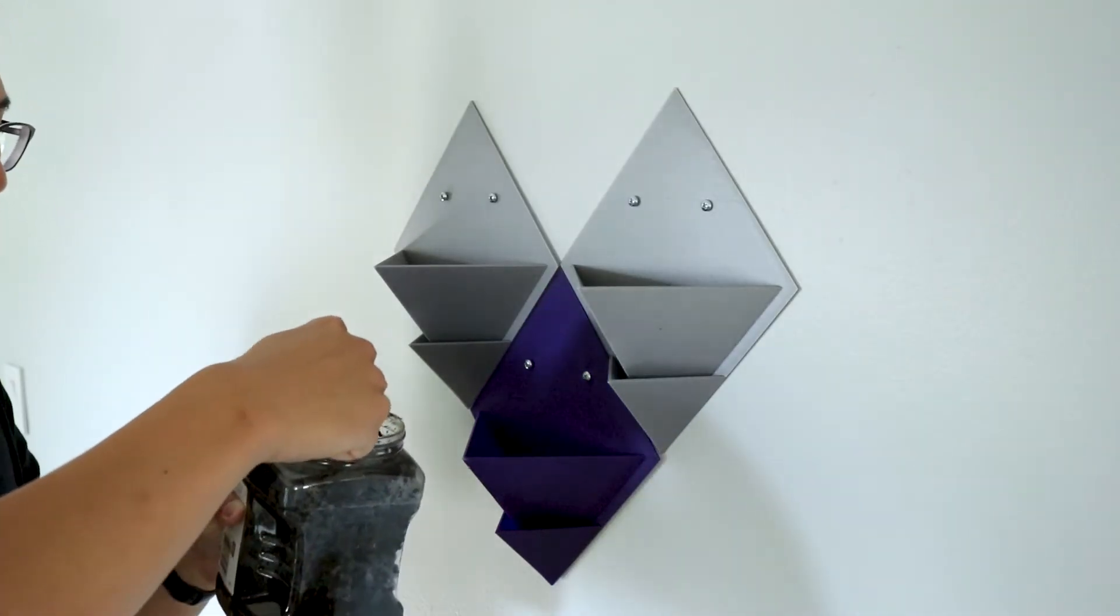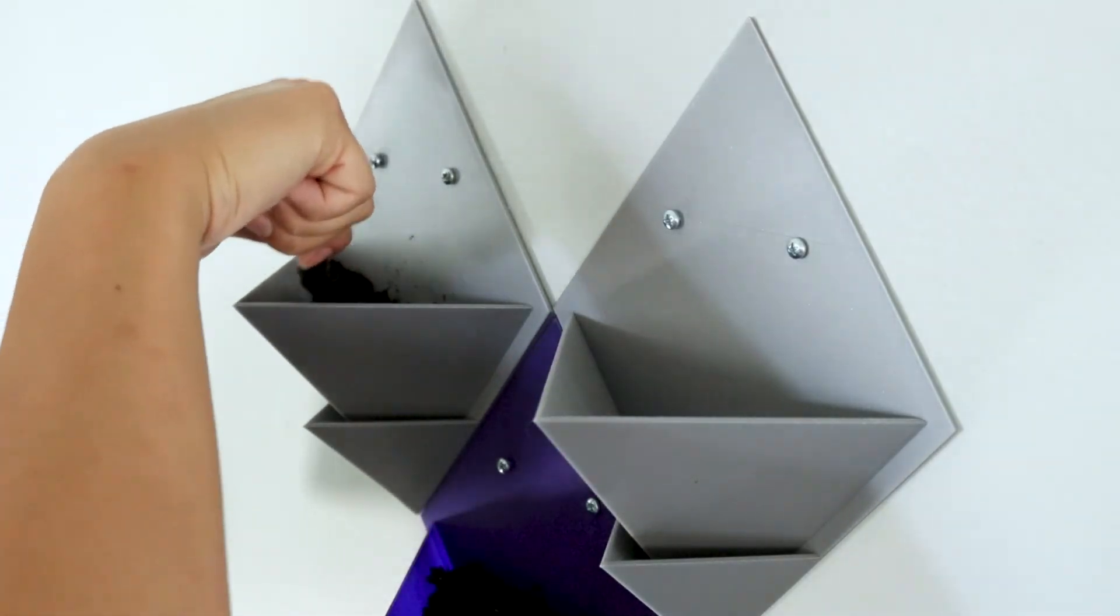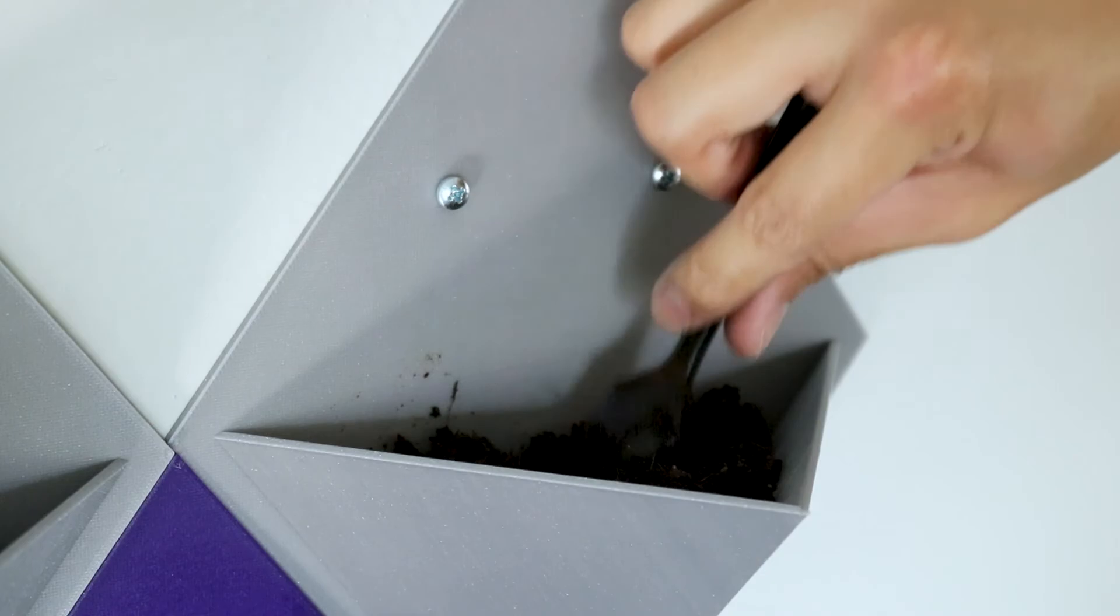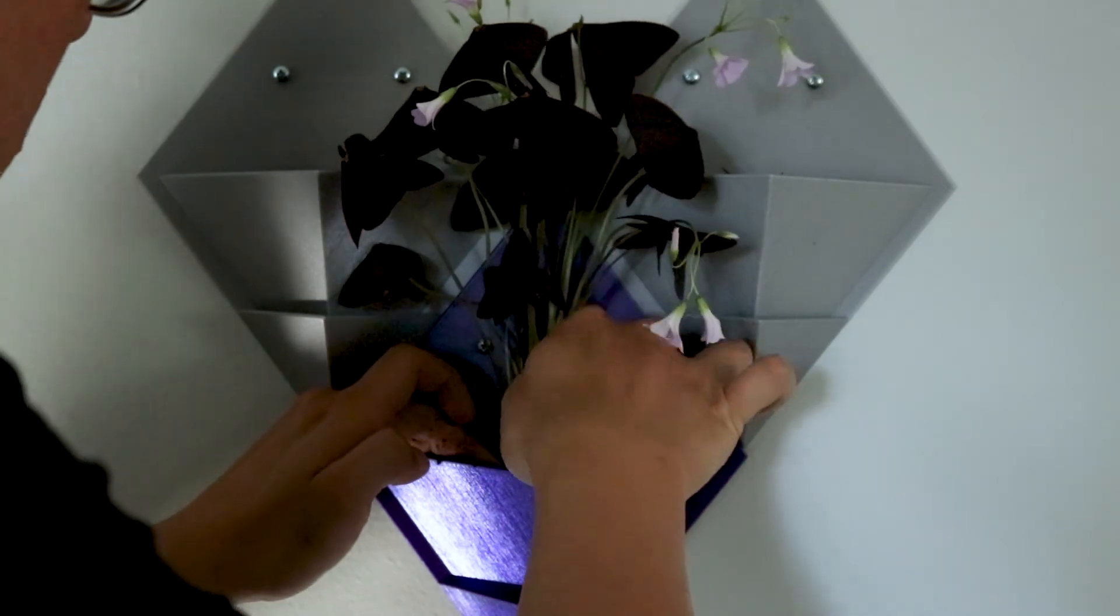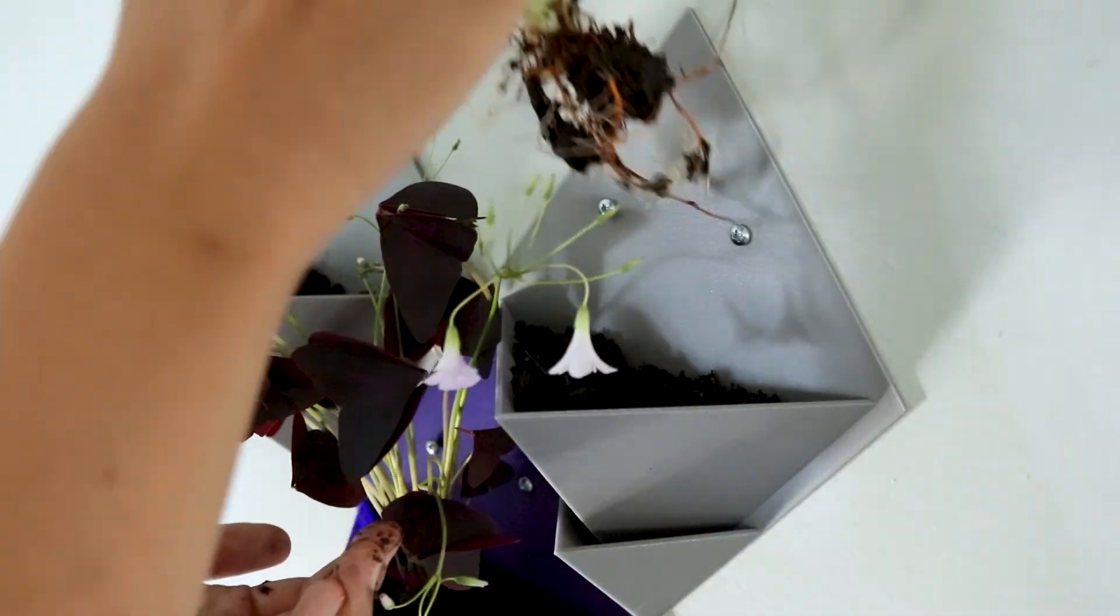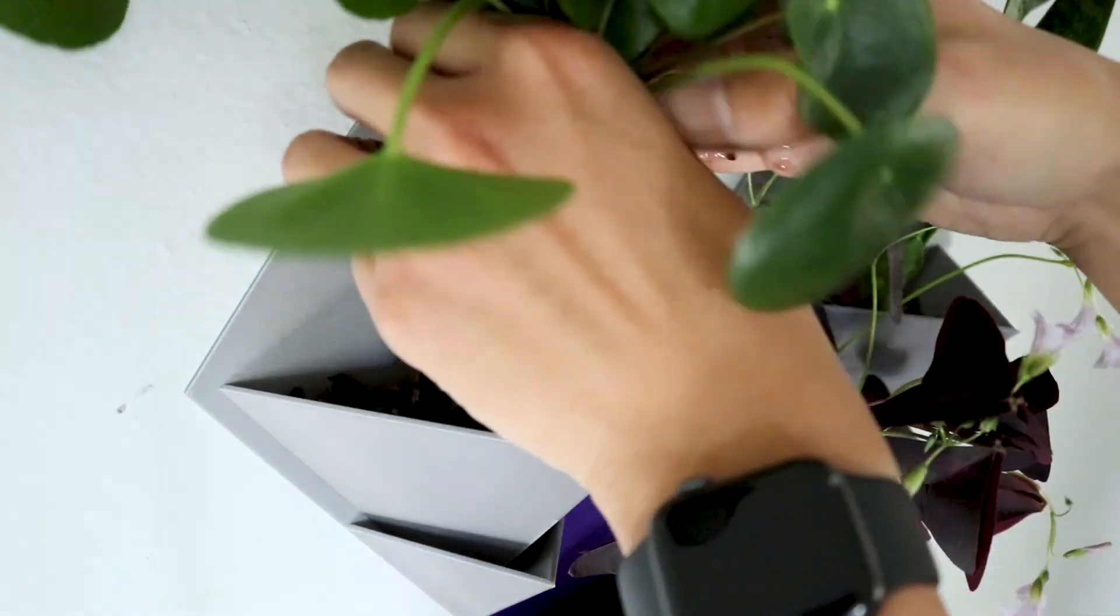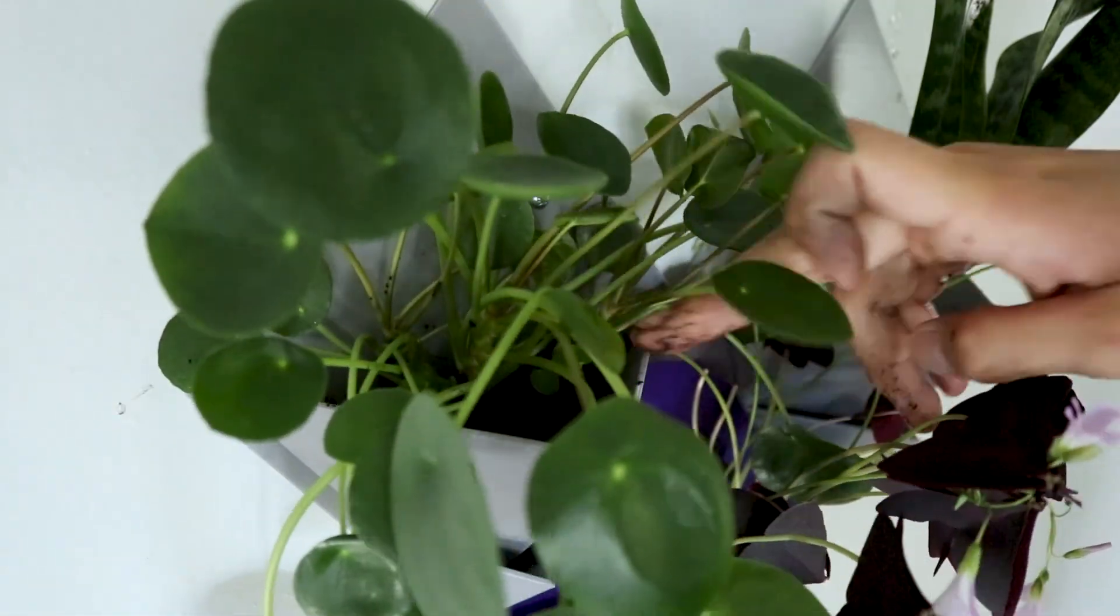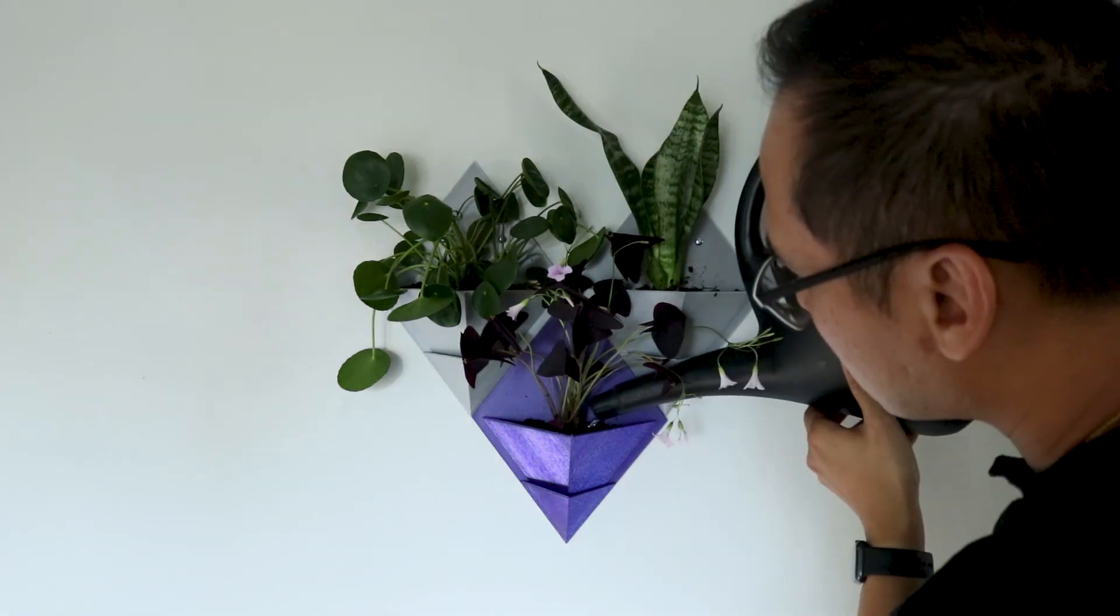With the new planters installed, I bring over a small bucket full of soil and use a spoon to transfer it into the planters. I put just enough soil into them so that I could relocate some plants to their new home. I top off the soil, press down to firm it up, and water the plants to help them adjust to the wall planters.